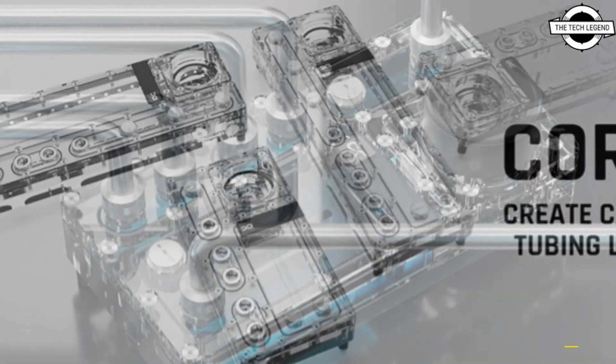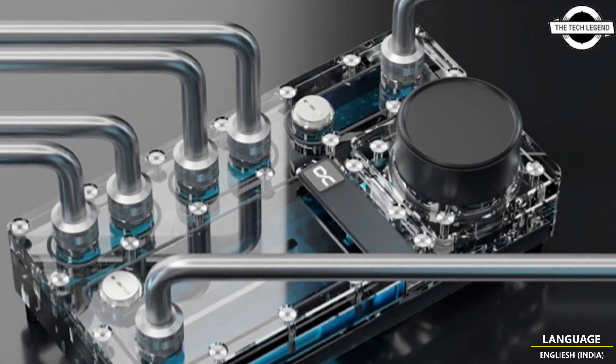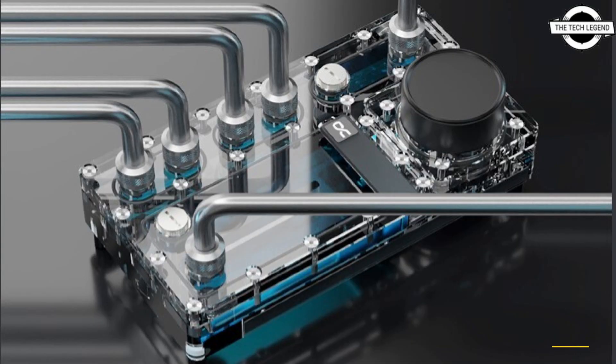The distro plate is ideally suited for custom water loops in which CPU and graphics card are to be cooled seamlessly. Alfacool's CO distro plate is made of high quality acrylic which allows a clear view of the coolant.